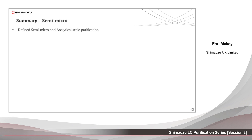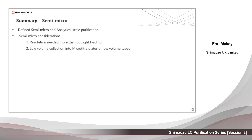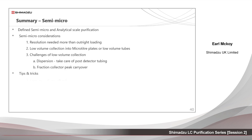In summary, we have defined semi-micro and analytical scale purification. Semi-micro considerations: firstly, resolution is needed more than outright loading. Secondly, low volume collection into microplates or tubes is necessary. Thirdly, there are challenges of low volume collection — namely dispersion and fraction collection peak carryover. Tips and tricks: peak noise rejection settings should be checked; fraction tracking is useful for locating fractions; and mobile phase monitoring prevents running columns dry.